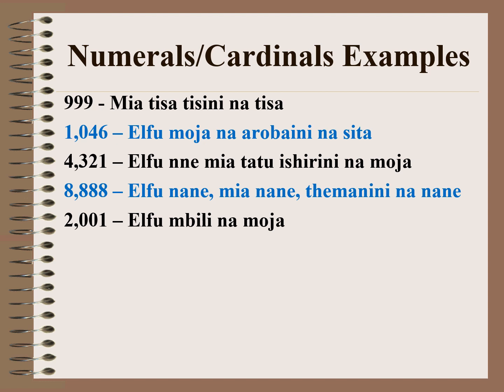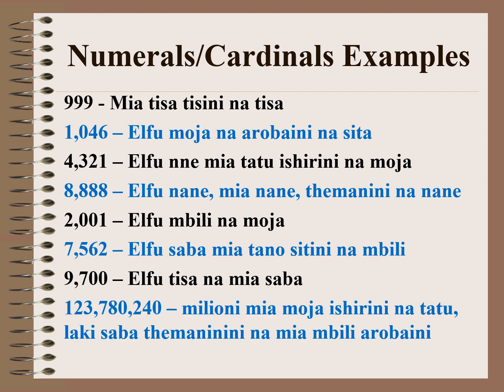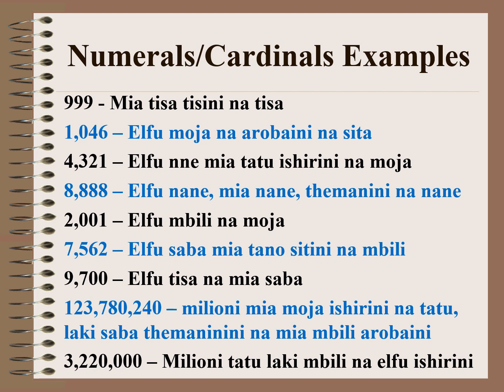2,001 is elfu mbili na moja. 7,562 in Kiswahili is elfu saba, mia tano, sitini na mbili. 9,700 in Kiswahili is elfu tisa na mia saba. 123,708,240 in Kiswahili is milioni mia moja ishirini na tatu, laki saba, themanini na mia mbili arubaini. 3,200,000 in Kiswahili is milioni tatu, laki mbili na elfu ishirini.